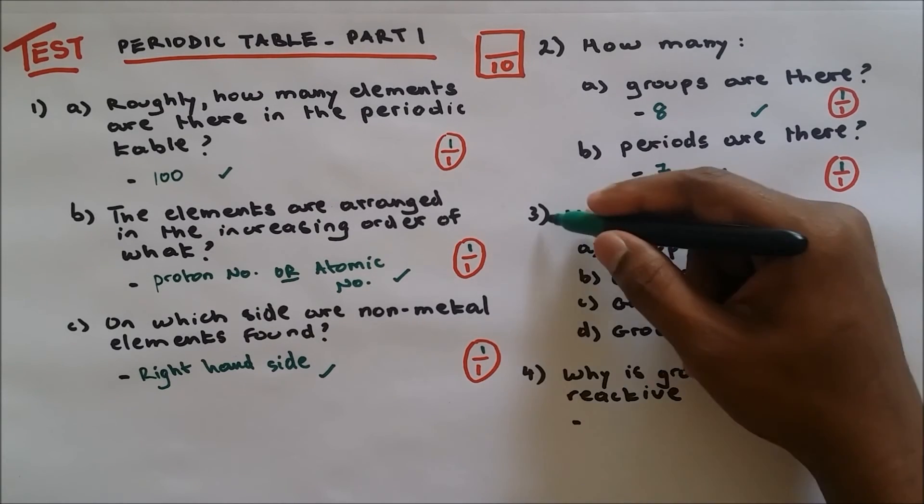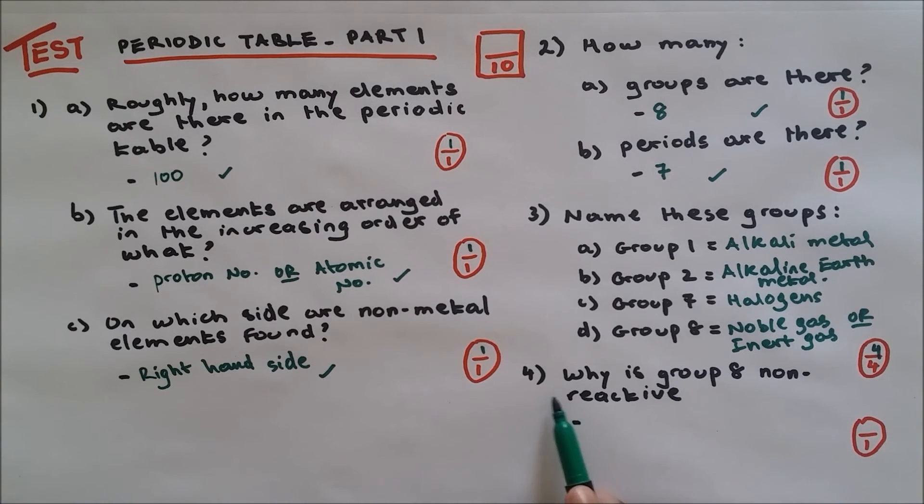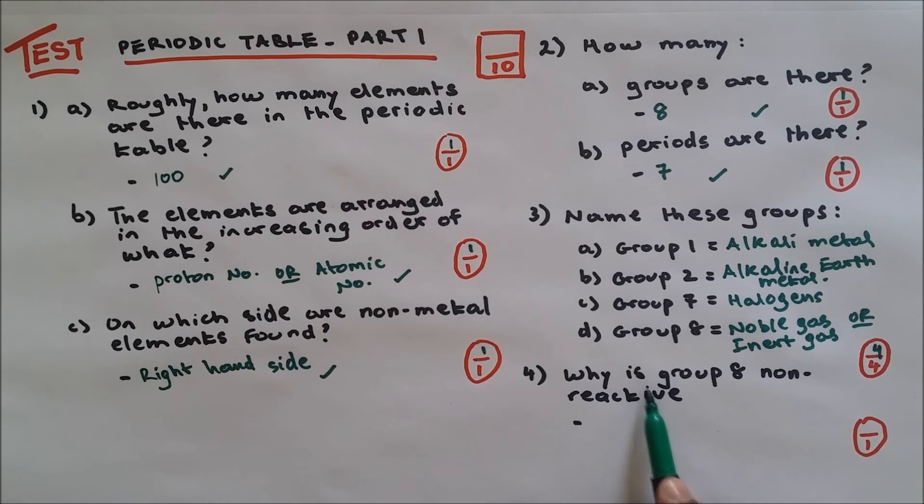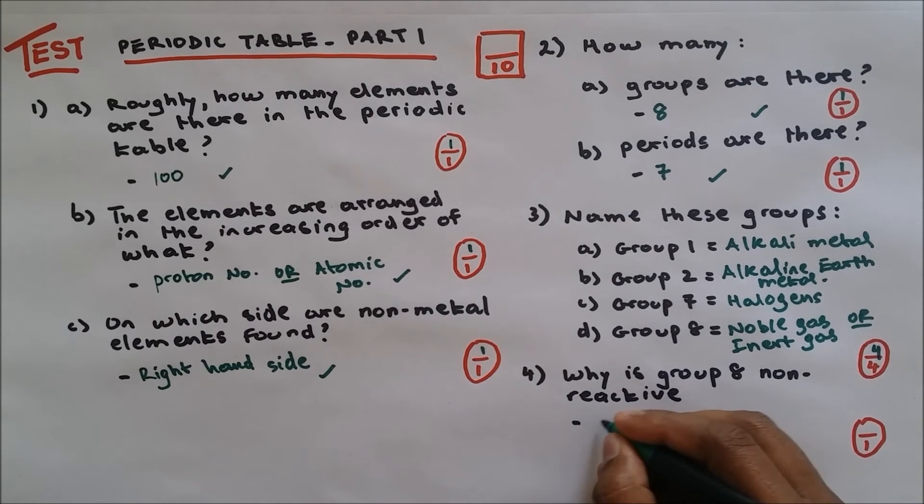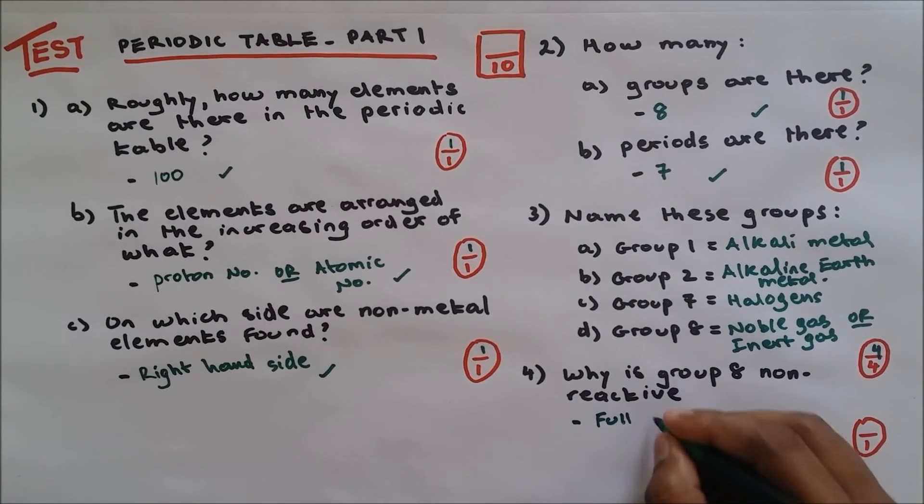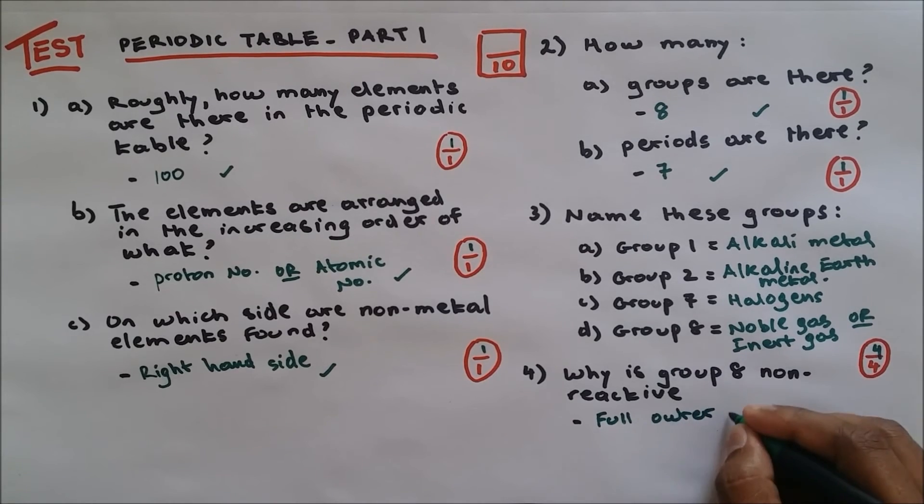Now the last question, question number four: why is group eight non-reactive? And the reason is because it has full outer shell of electrons.